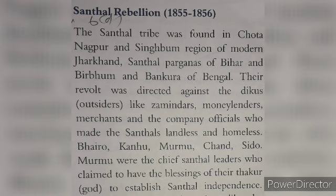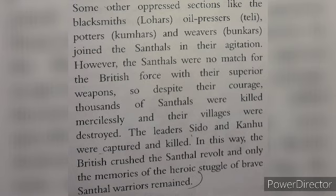Bhairon, Kanhu, Murmu, Chand, and Sido Murmu were the chief Santhal leaders who claimed to have the blessing of their Thakur (God) to stabilize Santhal independence. Some other oppressed sections like the blacksmiths (lohar), oilpressers (teli), potters (kumhar), and weavers (bunkar) joined the Santhals in their agitation.